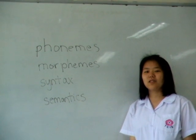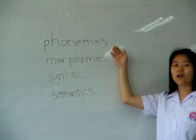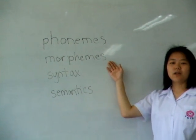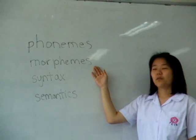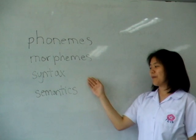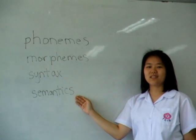There are four main elements in language: phonemes or letters, morphemes or words, syntax or grammar, and semantics or sentences.